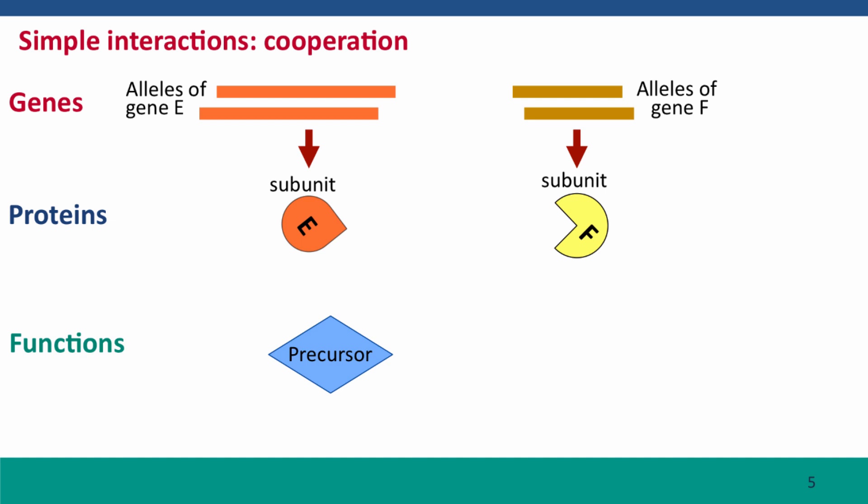Here's a situation where, in order to convert the precursor to the product, you require the products of two genes working together. This is very common. Many reactions are catalyzed by an enzyme that consists of subunits coded by two separate genes, as we're indicating here.